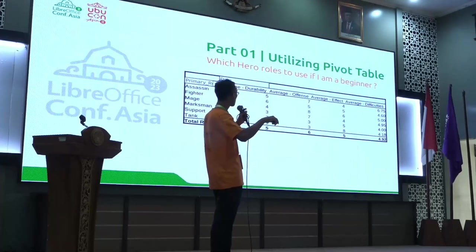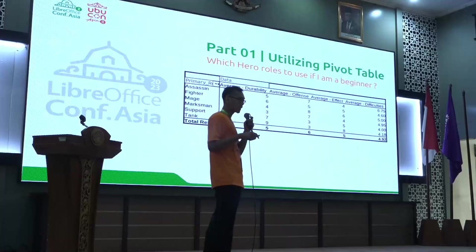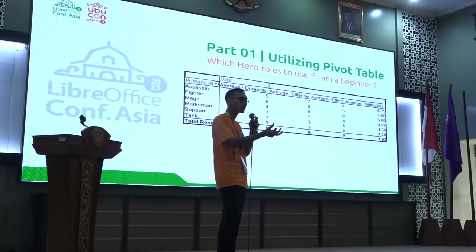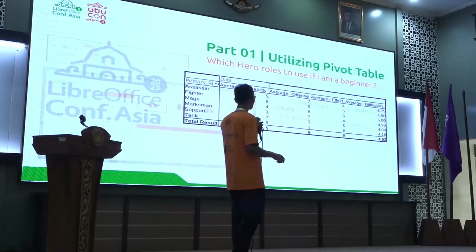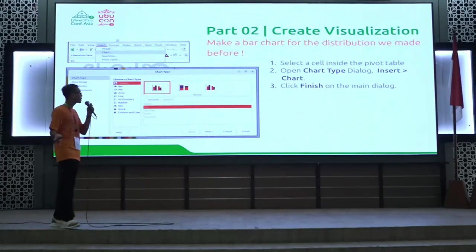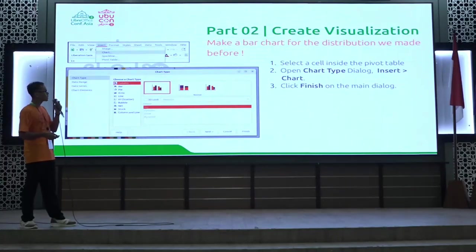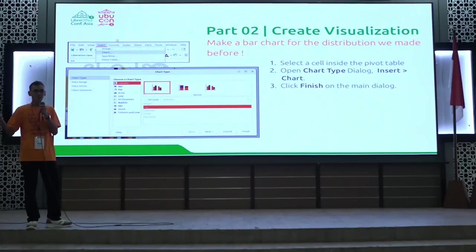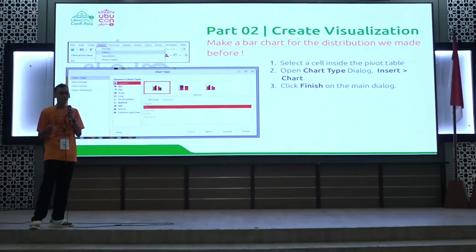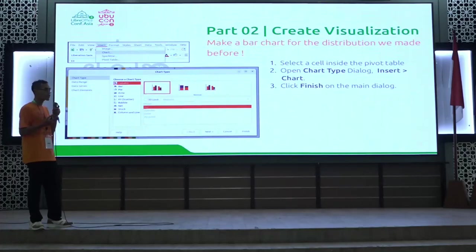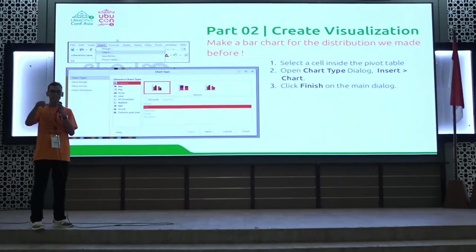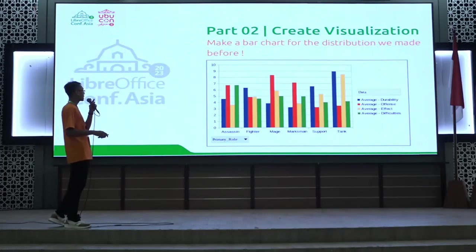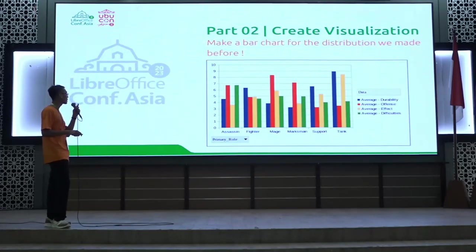After that, we create a visualization. To make a bar chart for the distribution we created, it's simple — use Insert > Chart from the pivot table. Don't forget to select a cell inside the pivot table first to make this work. A fancy chart will then appear.